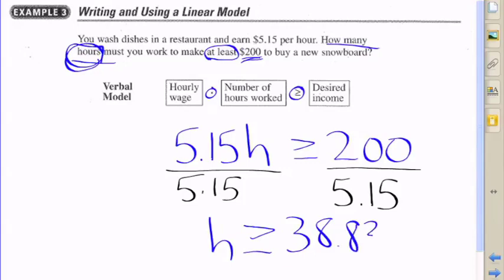We can pretty much just say that you've got to work about 39 hours in order to make enough money to buy that new snowboard.